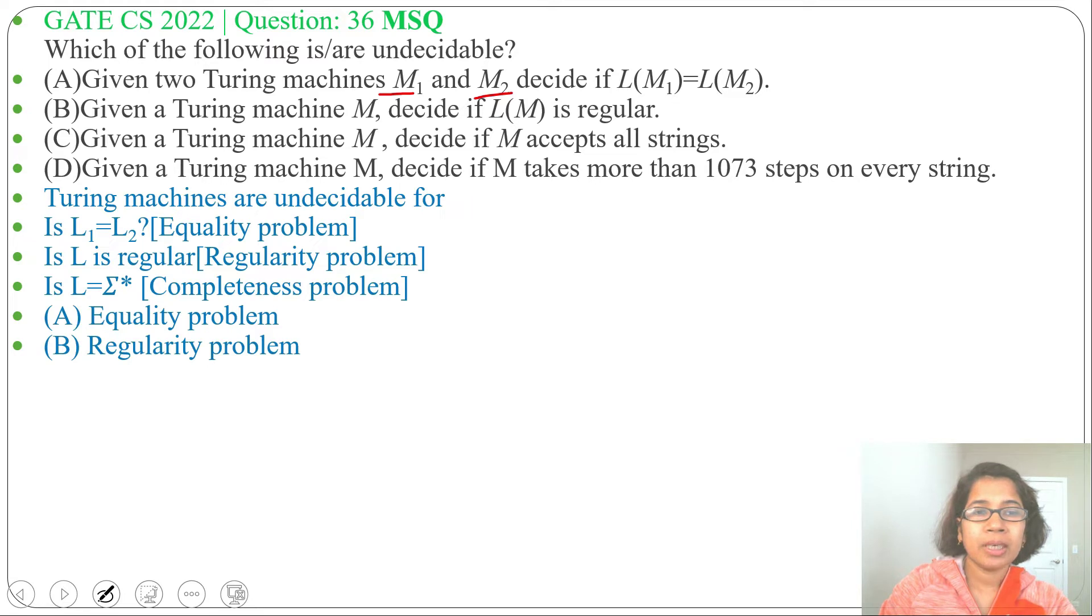Next, option C: given a Turing machine M, decide if M accepts all strings. This comes under totality or completeness problem, and Turing machines are undecidable for completeness problem.